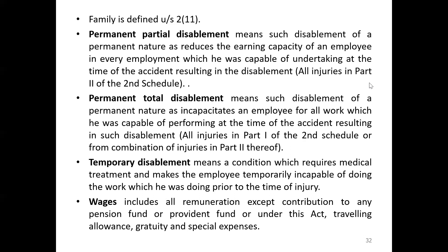All injuries covered under permanent partial disablement are mentioned in Part 2 of the Second Schedule. Permanent total disablement means such disablement of a permanent nature as incapacitates an employee for all work which he was capable of performing at the time of the accident — it is 100 percent disablement. All these injuries are covered under Part 1 of the Second Schedule, or from a combination of injuries in Part 2 thereof.